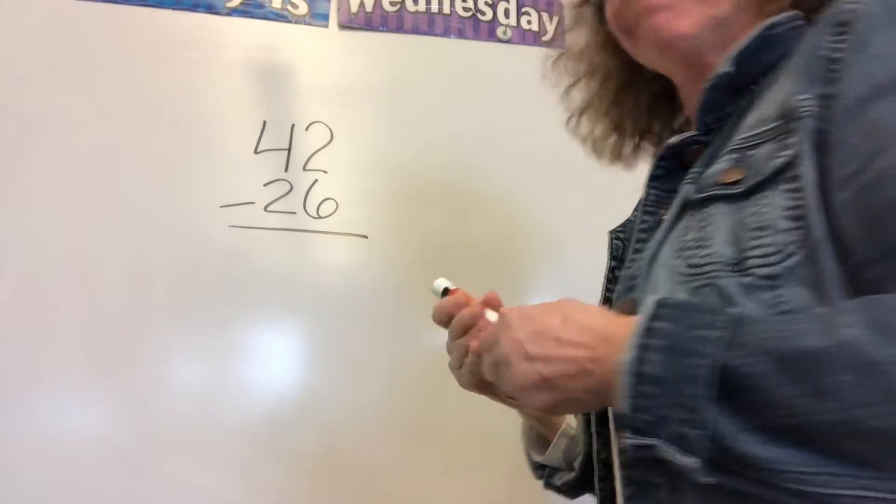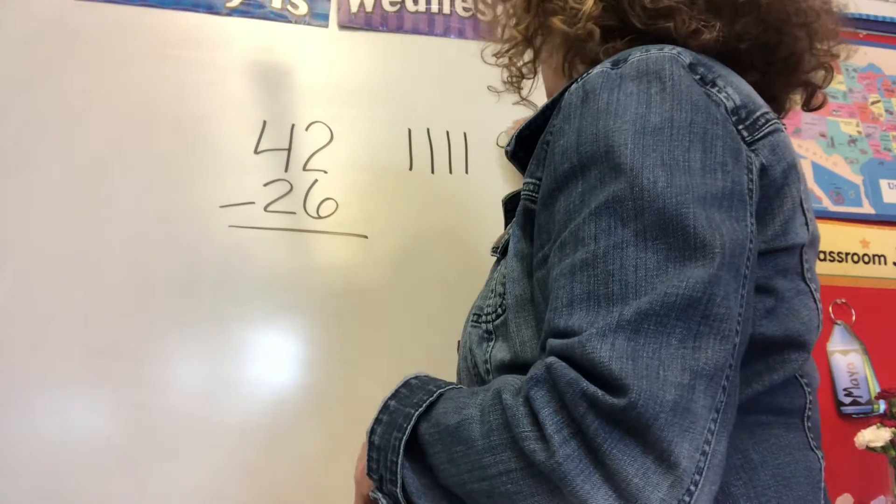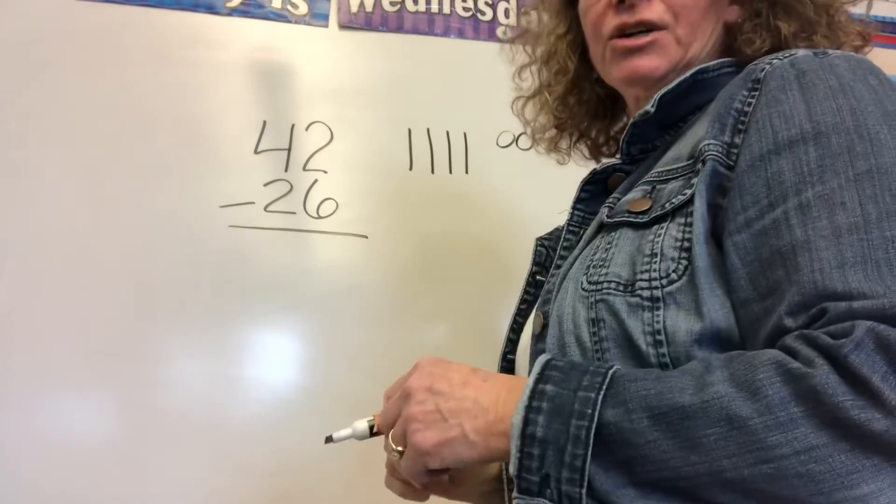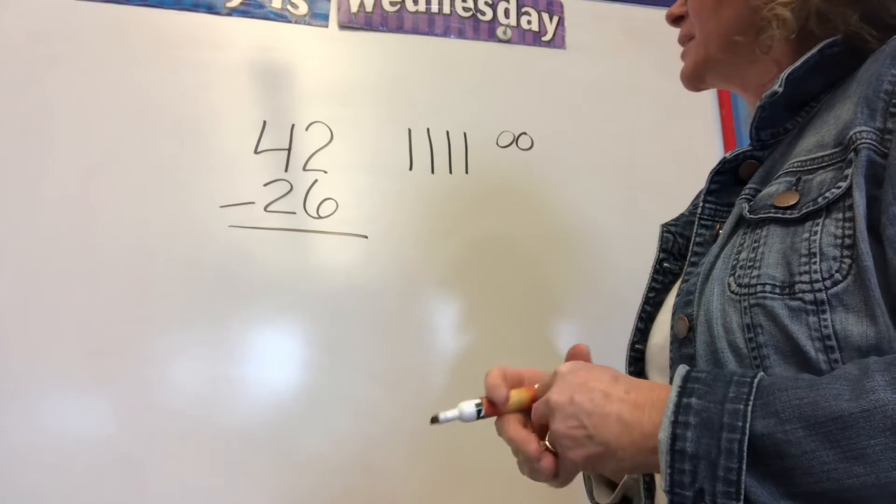The first thing I need to do is draw it. I'm going to draw 42: 10, 20, 30, 40, 1, 2. And I really encourage them to draw it neatly so they can use that drawing later.